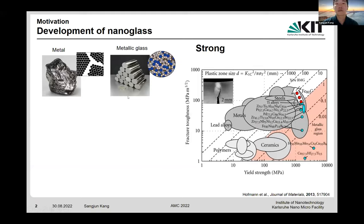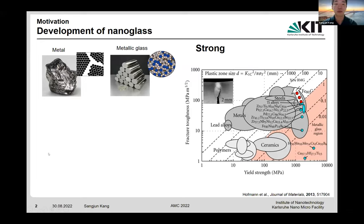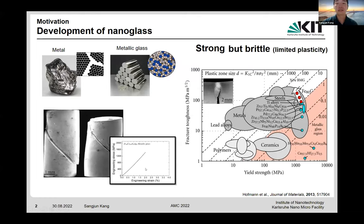Nanoglass has been developed to overcome the limitations of conventional amorphous alloy. Metallic glass is a metallic alloy in the glass phase, so we also call this material a non-crystalline alloy. Owing to the difference in atomic structure compared to conventional polycrystalline alloy, metallic glass exhibits superior mechanical strength, with very high yield strength compared to ceramics, metals, and crystalline alloys. However, metallic glass has not yet been successfully adopted for industrial application, as the main problem is limited ductility.